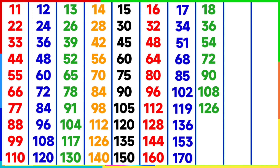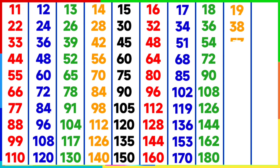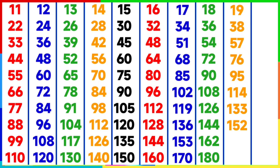18 sevens are 126, 18 eights are 144, 18 nines are 162, 18 tens are 180. Table of 19: 19 ones are 19, 19 twos are 38, 19 threes are 57, 19 fours are 76, 19 fives are 95, 19 sixes are 114, 19 sevens are 133, 19 eights are 152, 19 nines are 171.